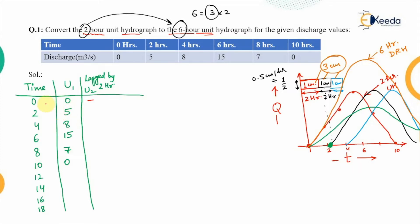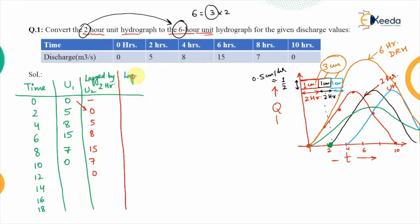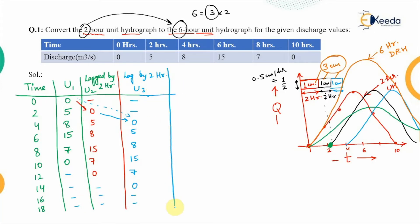Lagging by two hours shifts each value forward by one time step. For U3, we lag by two more hours — effectively a four-hour lag from U1 — giving the sequence: 0, 0, 0, 0, 5, 8, 15, 7, 0. These are the ordinates for the three 2-hour unit hydrographs U1, U2, and U3.